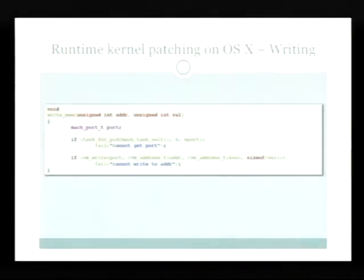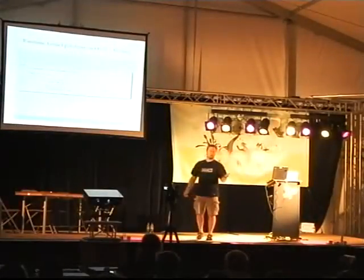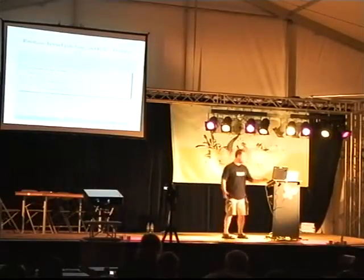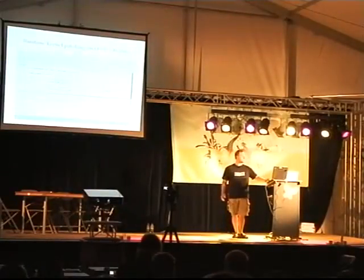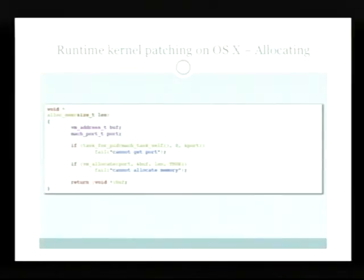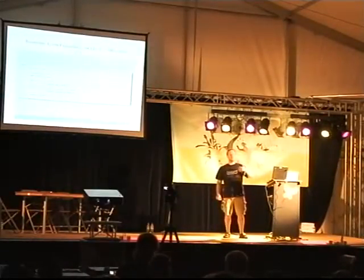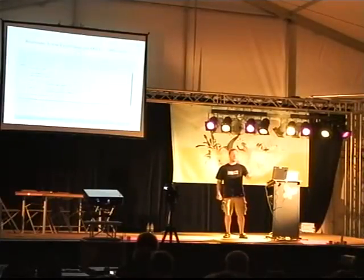Writing to kernel memory is basically the same thing: we use task_for_pid on zero, get the port, and then we use vm_write on that port. And the really interesting one for us is vm_allocate. This allows us to allocate memory inside a different process — in this case, the process used for the kernel — allowing us to use a very easy way to introduce new code into the kernel.